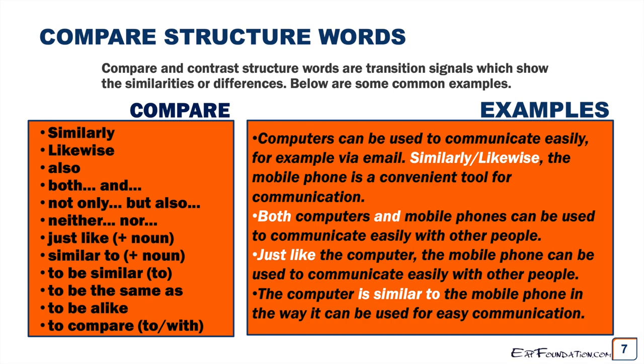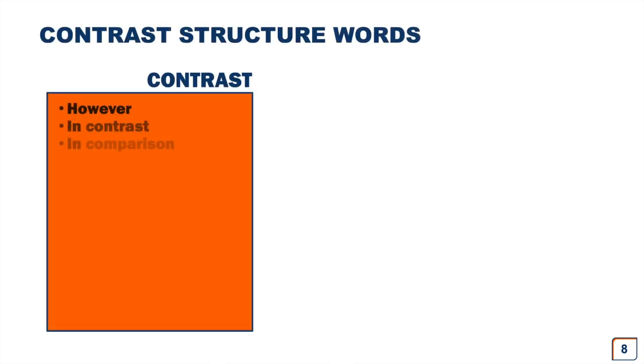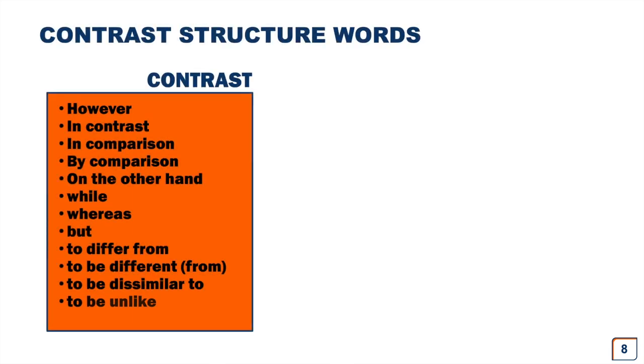Now let's look at contrast structure words. For contrast, you would use words such as however, in contrast, in comparison, by comparison, on the other hand, while, whereas, but, to differ from, to be different from, to be dissimilar to, and to be unlike.